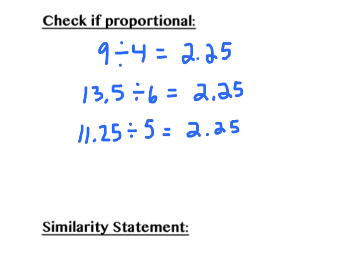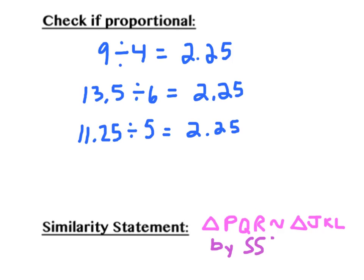Because all of our ratios are proportional — they are all equal to each other — we know that our two triangles are in fact similar. Our last job is to write a similarity statement: triangle PQR is similar to triangle JKL. Remember that when writing our similarity statement, we need to put the corresponding angles in the correct order. Finally, we state that we know this is true by the Side-Side-Side rule.